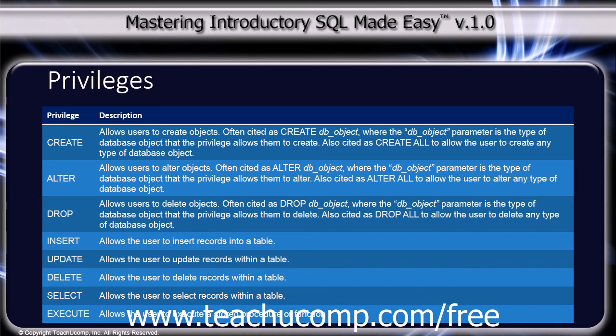The drop privilege allows users to delete objects, often cited as DROP database_object, where the database object parameter is the type of database object that the privilege allows them to delete. Also cited as DROP ALL to allow the user to delete any type of database object.